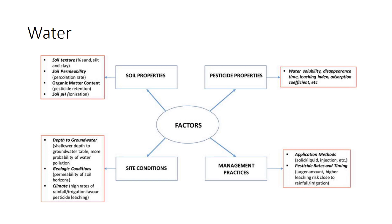Adsorption refers to the tendency of pesticides to become attached to soil particles. Lower adsorption indicates a greater potential for pesticides to leach or move with water. However, some pesticides that adsorb to soil particles, such as pyrethroid insecticides, can be washed into surface water when soil and sediment erode. The water solubility of a pesticide affects the ease with which it leaches into soil or moves with surface runoff water. Surface water and groundwater contamination can be closely connected, and water-soluble pesticides can be a problem in both.